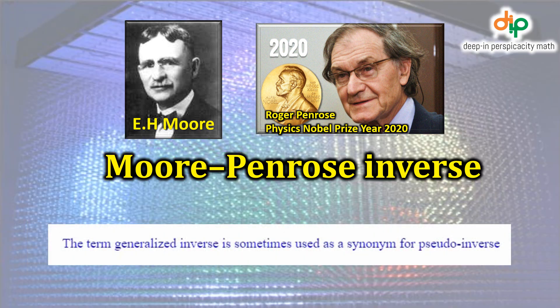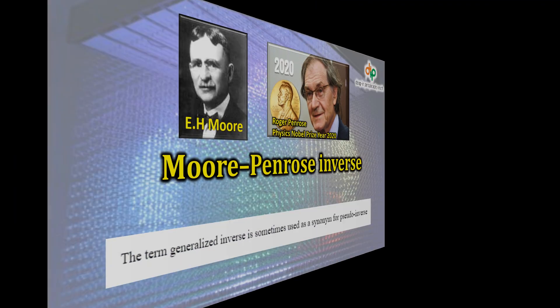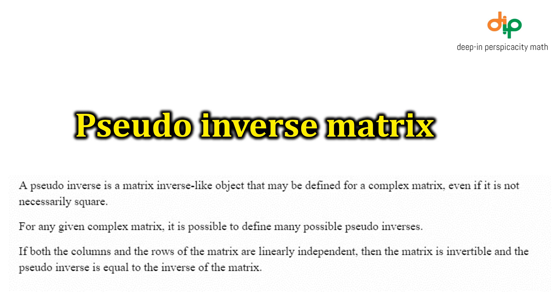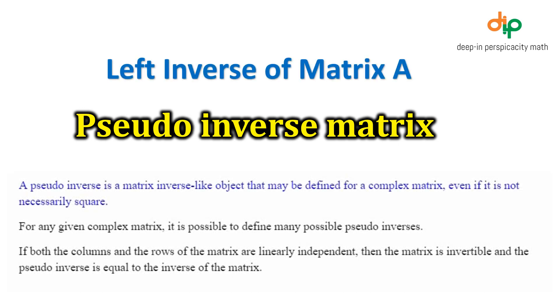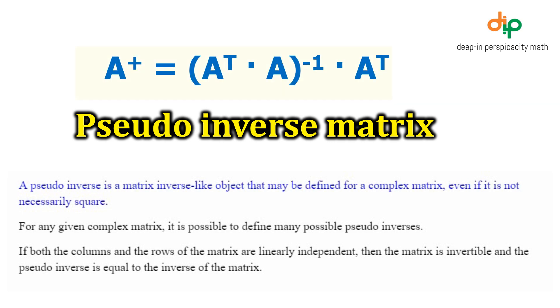The term generalized inverse is sometimes used as a synonym for pseudoinverse. A pseudoinverse is a matrix inverse-like object that may be defined for a complex matrix, even if it is not necessarily square.